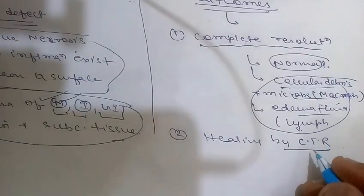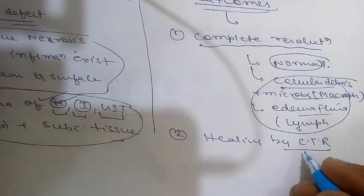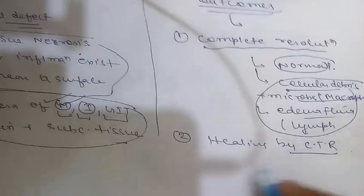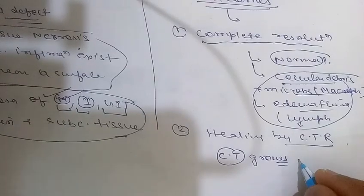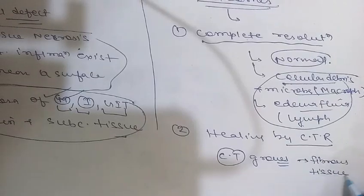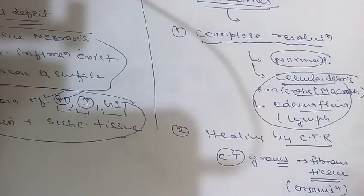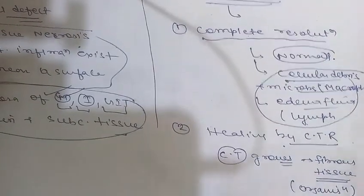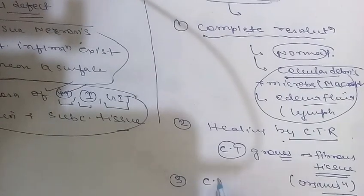The second outcome is healing by connective tissue replacement, also known as scarring or fibrosis. This occurs after substantial tissue destruction when the inflammatory injury involves tissues incapable of regeneration, or when there is extensive fibrin degradation that cannot be adequately cleared. In this situation, connective tissue grows into the area of damage, converting it into fibrous tissue — a process known as organization.